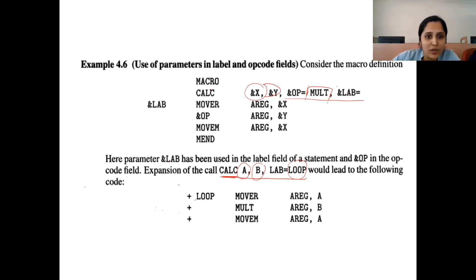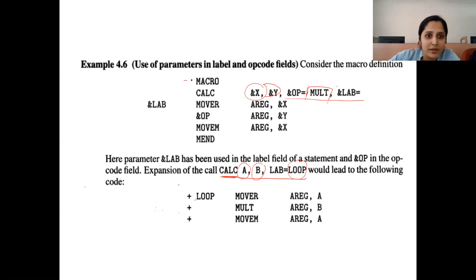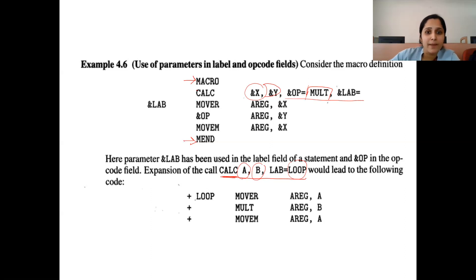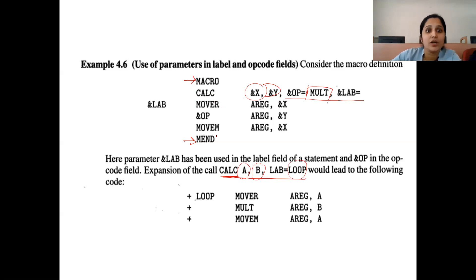This is the macro prototype: the name of the macro is CALC, followed by a list of parameters to pass. These are the model statements, and these are the directives — macro and MEND. Wherever the macro processor gets the keyword or directive 'macro', it creates an entry and keeps whatever model statements are there in certain tables so that whenever that macro is called, using the contents of those data structures, the expansion task can be carried out. Which data structures are required and how that task is done will be discussed afterwards.